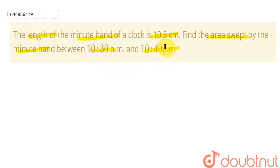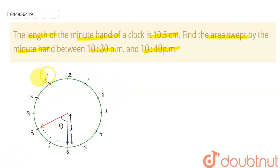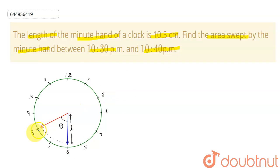Let me first draw a clock. When the time is 10:30, the minute hand will be at 6. And when the time is 10:40, the minute hand will be at 8. Let me name this point as O, A, and B.